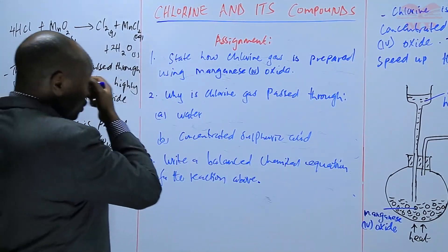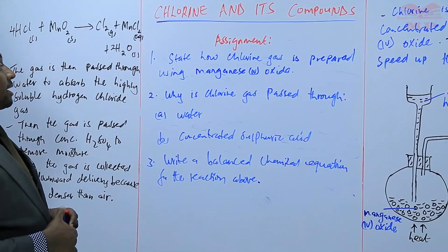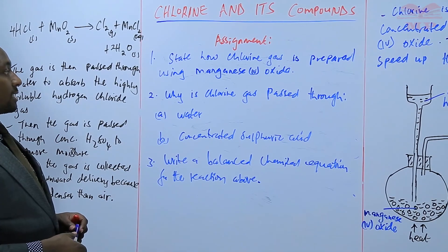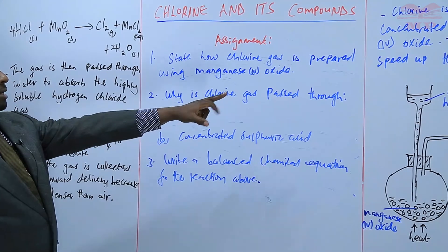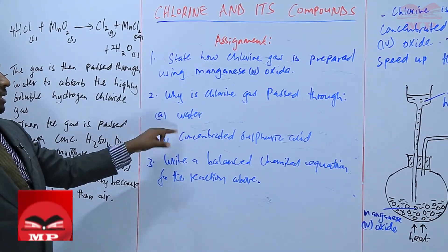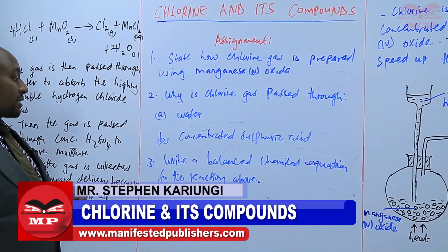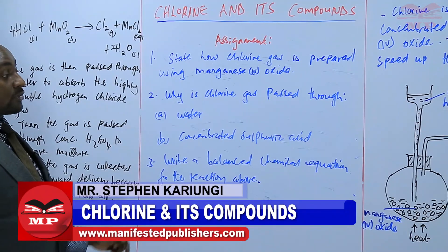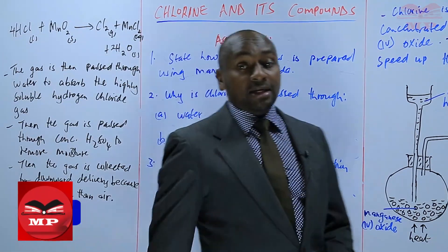Assignment: Question one — state how chlorine gas is prepared using manganese(IV) oxide. Question two — why is chlorine gas passed through water and then concentrated sulfuric acid? Question three — write a balanced chemical equation for the reaction above. We'll stop there until next time. Goodbye.